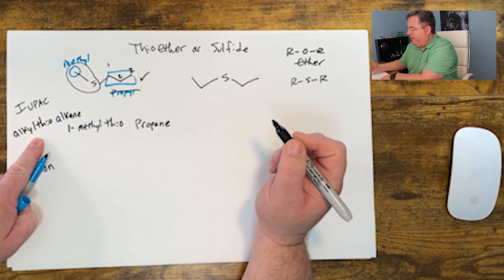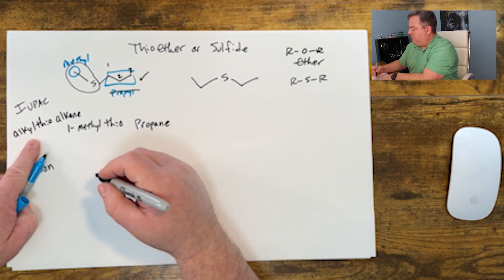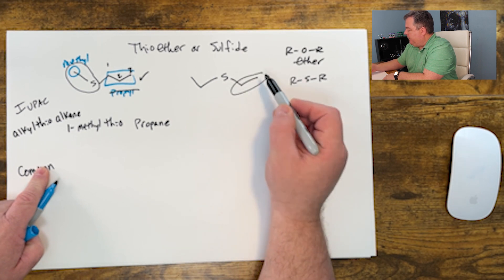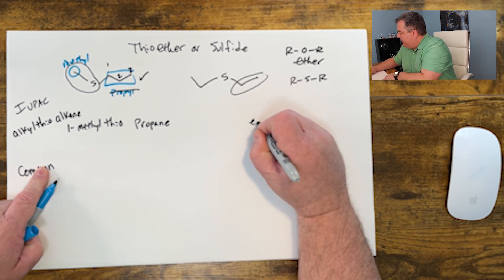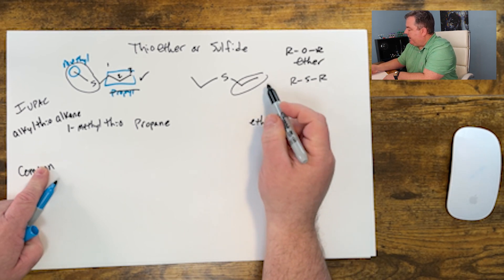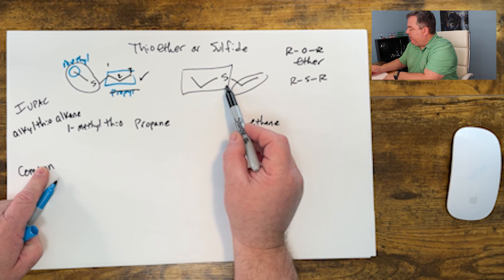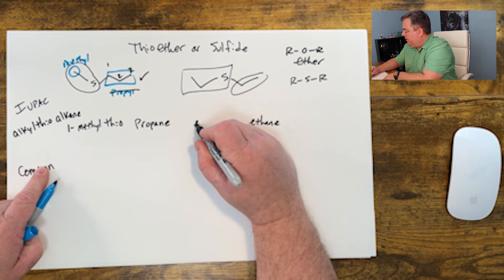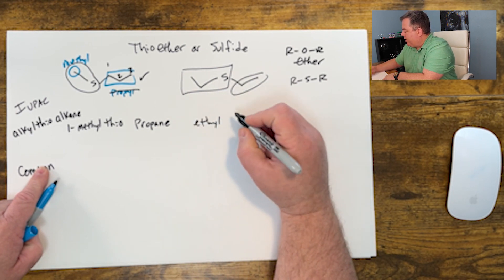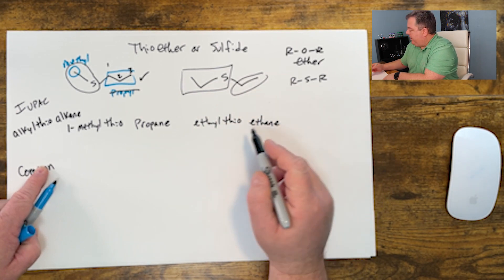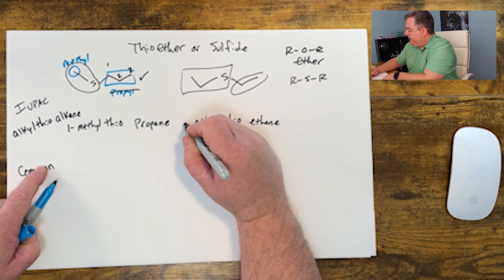This one, we find the longest carbon chain: two carbons, so that's ethane at the very end. That names that piece. This piece is an ethylthio group: two carbon ethyl, the sulfur is the thio part. So that's an ethylthioethane, and you can put a one on it if you want to number the ethane.